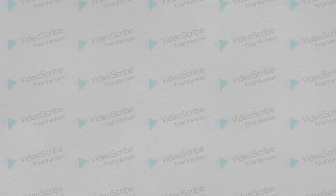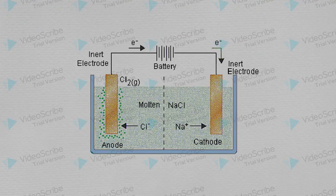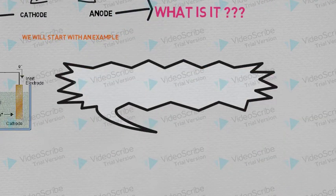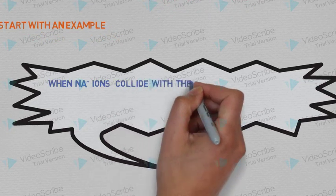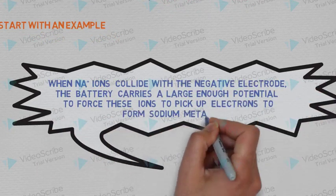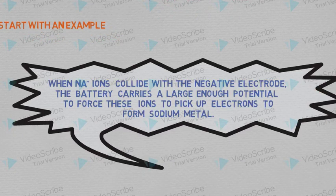Let's see an example. In that electrolytic cell, we saw that when sodium ions collide with a negative electrode, the battery carries a large enough potential to force these ions to pick up electrons to form sodium metal.